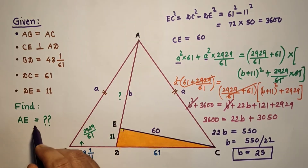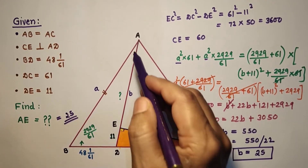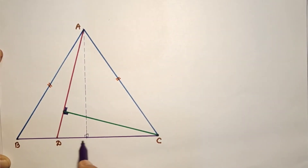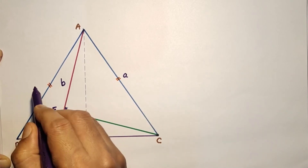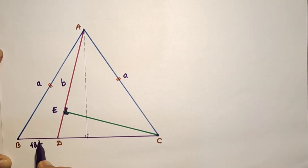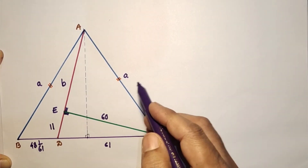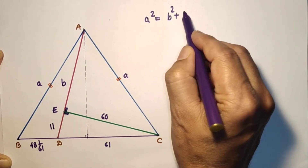So AE = 25 units. Now by the second method using Pythagoras theorem: we drop a perpendicular from A, which is the perpendicular bisector of BC since the triangle is isosceles. We label BD = x, DC = y. We already know CE = 60, ED = 11, and a² = b² + 3600.